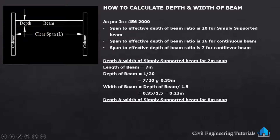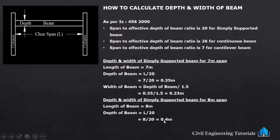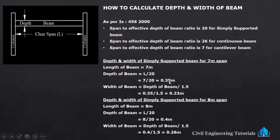Next, depth and width of simply supported beam for 8 meter span. Length of beam is 8 meter. Depth of beam is L by 20, so 8 divided by 20 gives 0.4 meter. Width of beam is depth divided by 1.5, so 0.4 divided by 1.5 gives 0.26 meter. So for 8 meter span: depth of beam is 0.4 meter and width of beam is 0.26 meter.